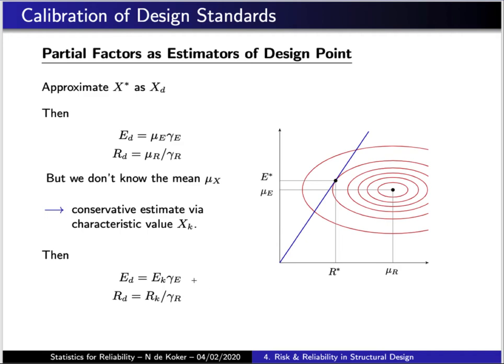In that sense, the partial factor is a value that we multiply our characteristic values by to get an estimated design point, which will fall somewhere in the vicinity of the actual design point.